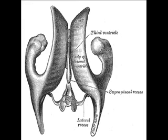It is in the midline between the left and right lateral ventricles. It communicates with the lateral ventricles anteriorly by the interventricular foramina of Monroe, and it communicates with the fourth ventricle posteriorly by the cerebral aqueduct of Silvius.